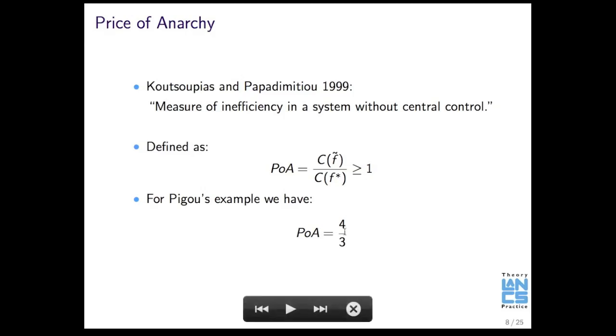And so, for Pigou's example, if you remember, the optimal cost was three quarters of an hour. The Nash cost was an hour, so the price of anarchy is one over three fourths, which is four thirds.